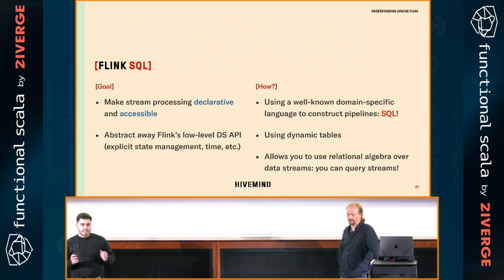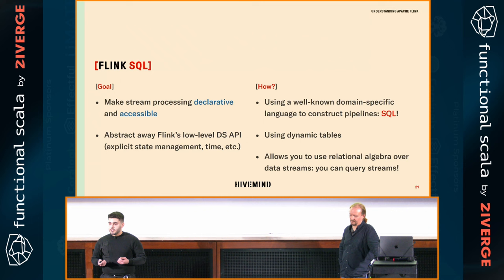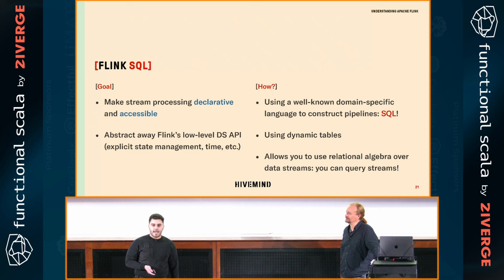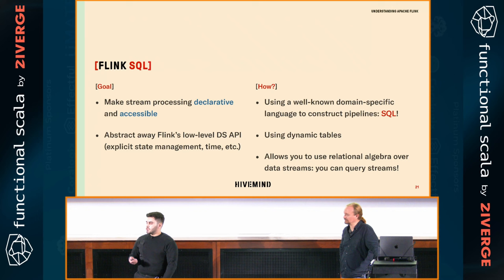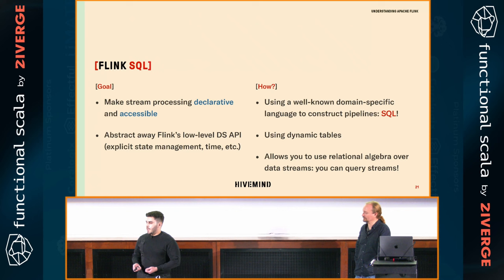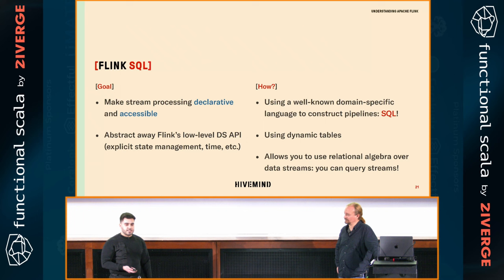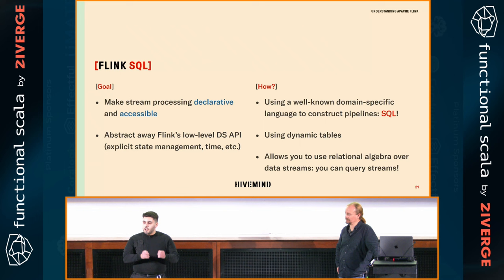So let's talk about Flink SQL, because that's how we managed to do that. The goal of Flink SQL is to use relational algebra — SQL — to control and manipulate your data streams. Since most of you don't know Flink, you can think of data streams as FS2 streams or ZIO streams. The problem with using those is that you don't have a relational API. If I want to do a left join or inner join, the boilerplate will be immense and I have to manage state myself.